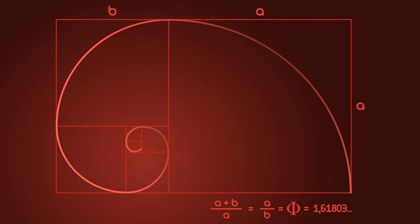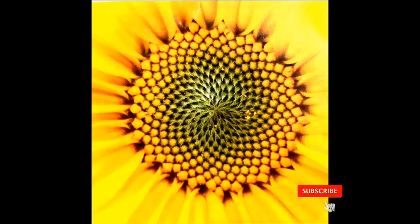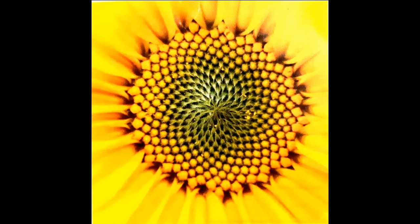Visually, this creates a swirling pattern as the sequence goes on. The Fibonacci numbers often appear in nature. For example, the number of petals on flowers are often Fibonacci numbers.